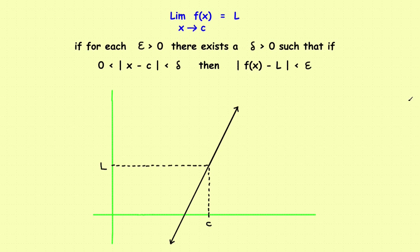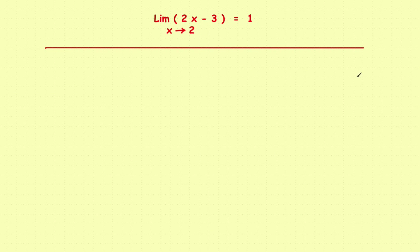First, let's look at the specific problem we want to work on. Suppose you wanted to show that the limit of f of x — in this case 2x minus 3 — as x approaches 2 is equal to 1. We want to prove that this is true using the epsilon-delta definition.